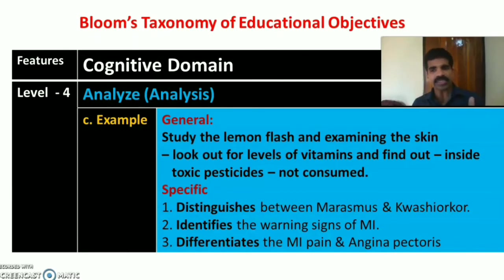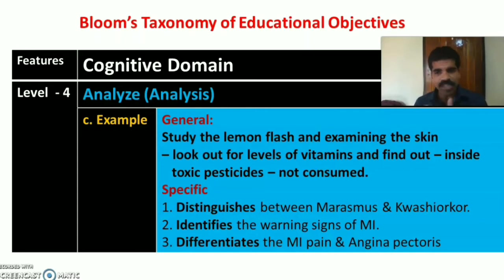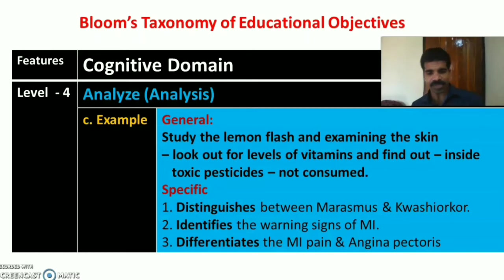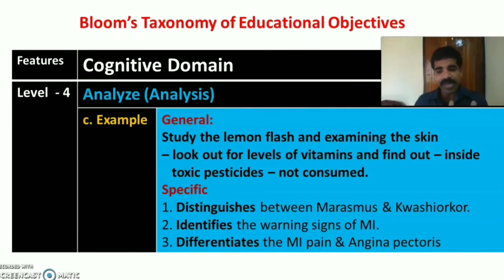In analysis, the student examines what has been learned. A general example is studying the lemon flesh, examining the skin of a person who applied it, looking at vitamin levels in lemon, and checking for possible toxic pesticides inside — making comparisons. Specific nursing examples: distinguishes between marasmus and kwashiorkor, identifying warning signs of MI, and differentiating myocardial infarction pain from angina pectoris pain.